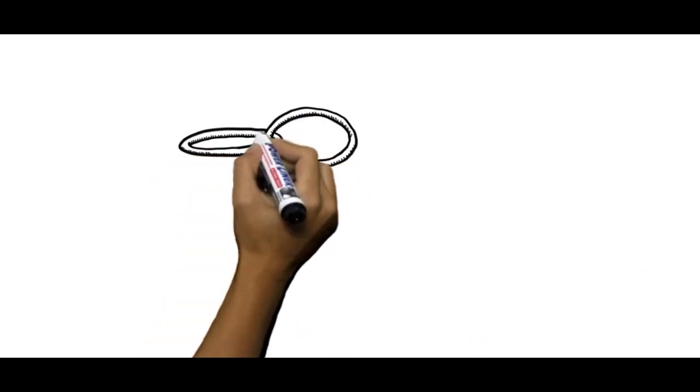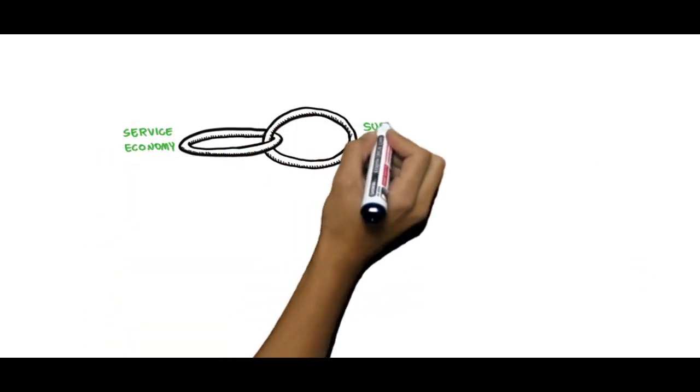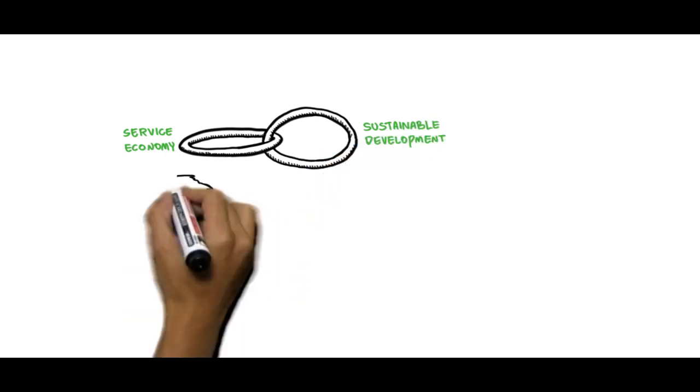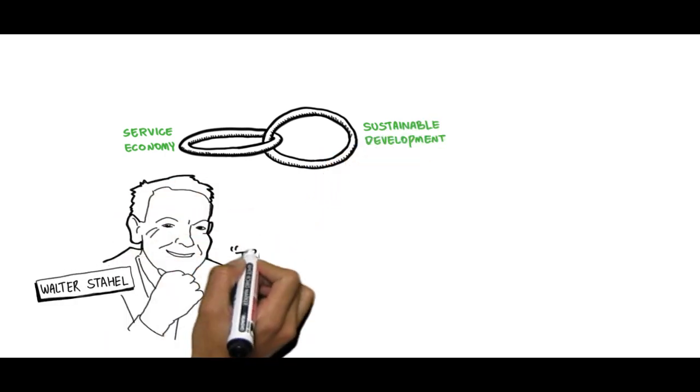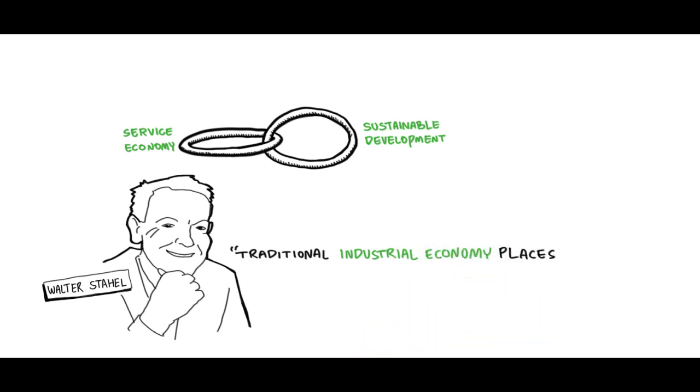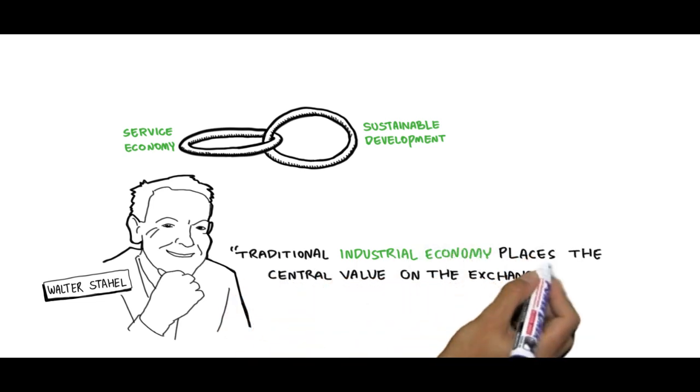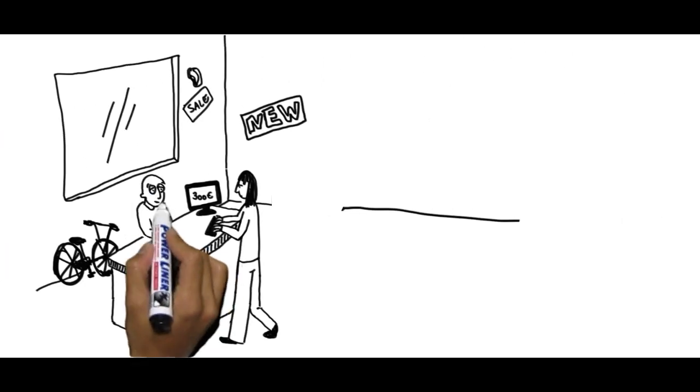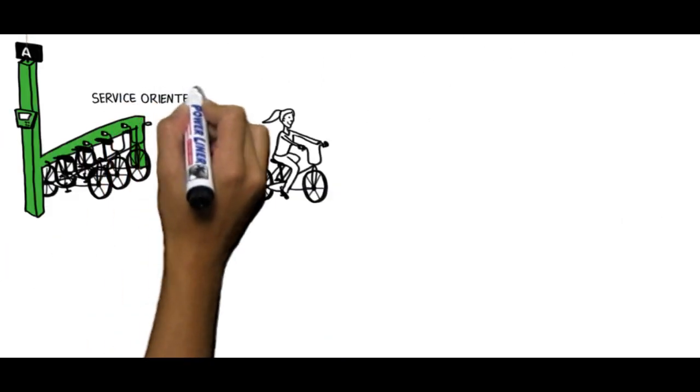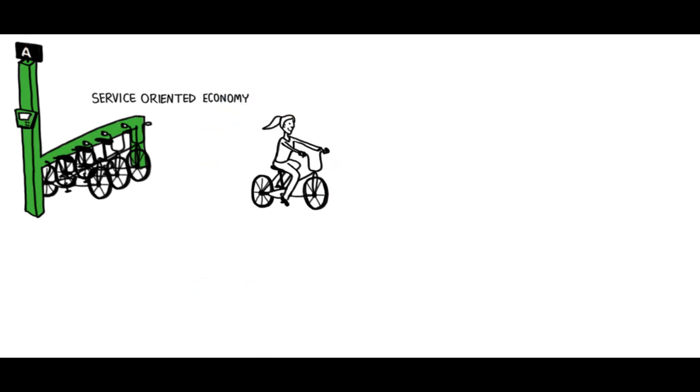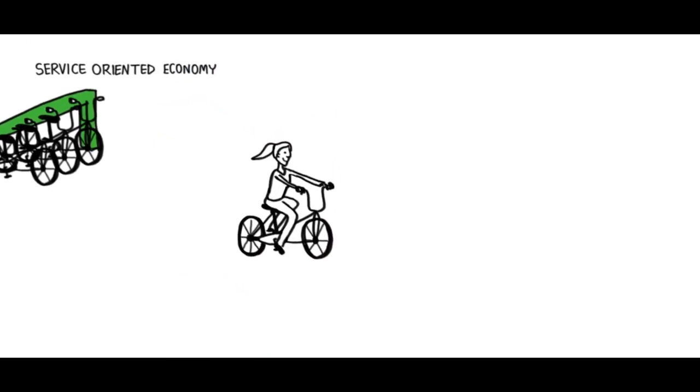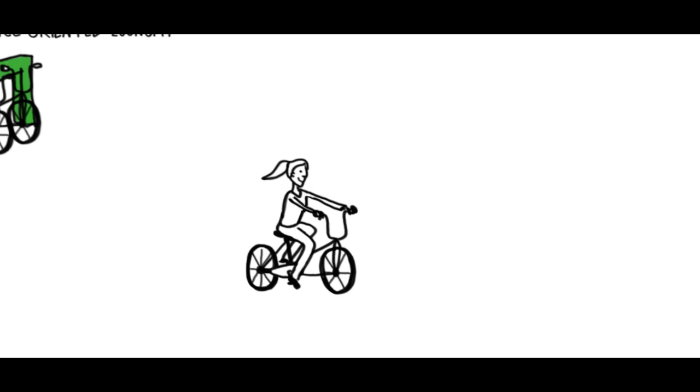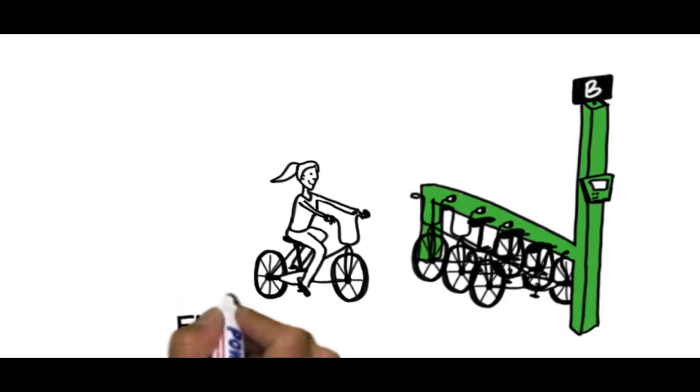The potential link between a service economy and sustainable development was proposed by Walter Stahel. According to Stahel, traditional industrial economy places the central value on the exchange of the products being consumed. On the other hand, service-oriented economy recognizes the value of utilization where the consumer pays for using the product. This is, in fact, a function-based economy in which the product is a mere means of providing function.